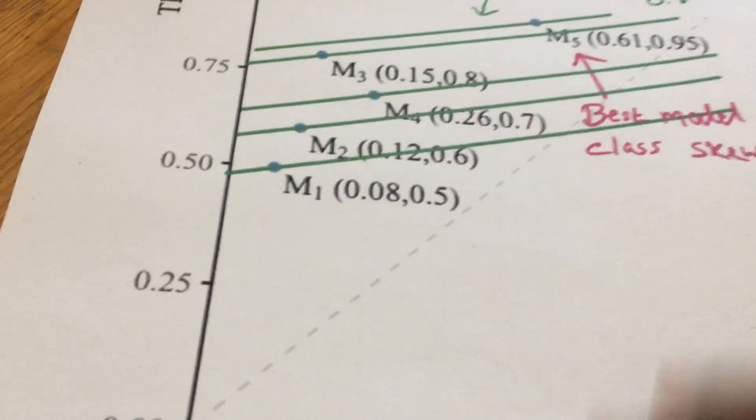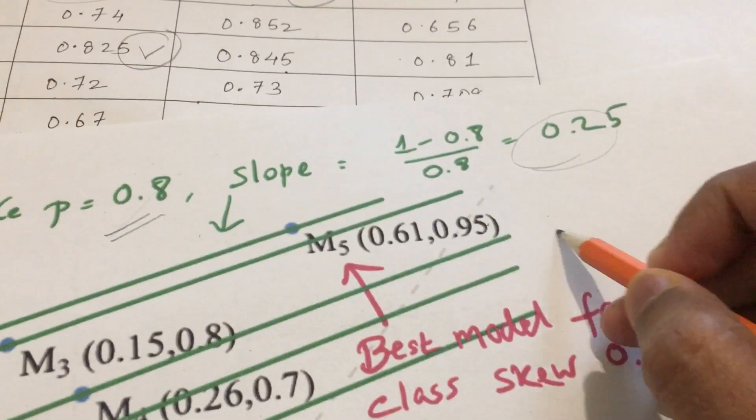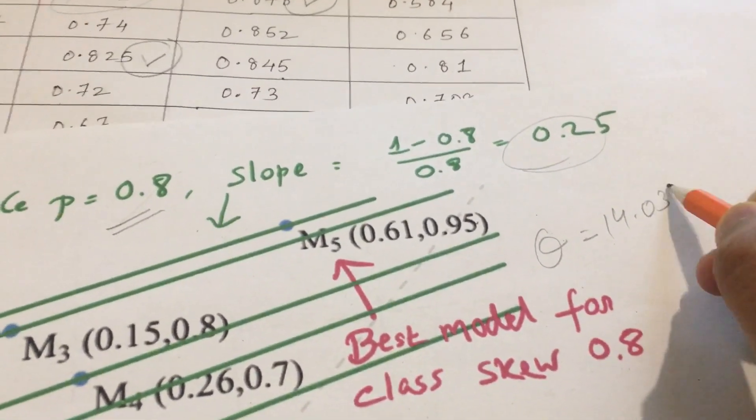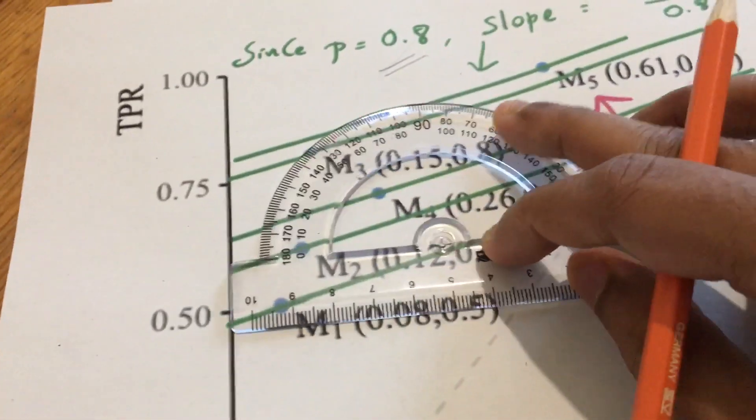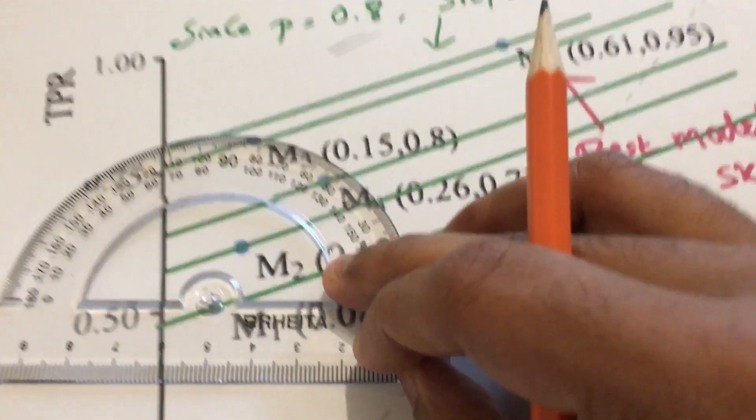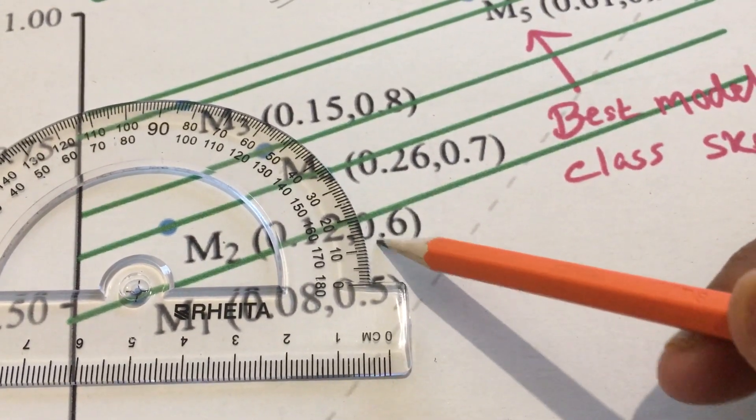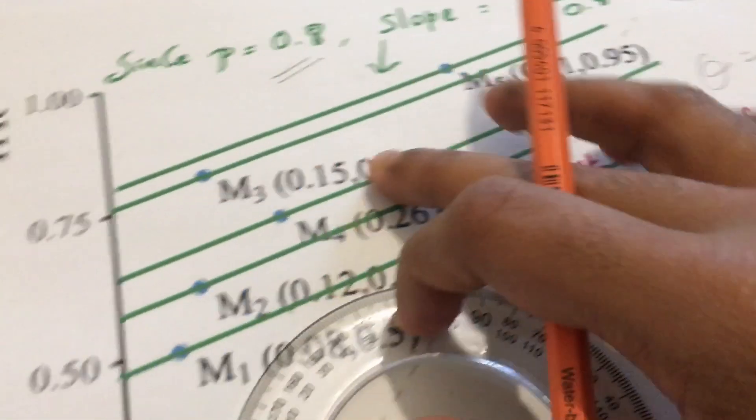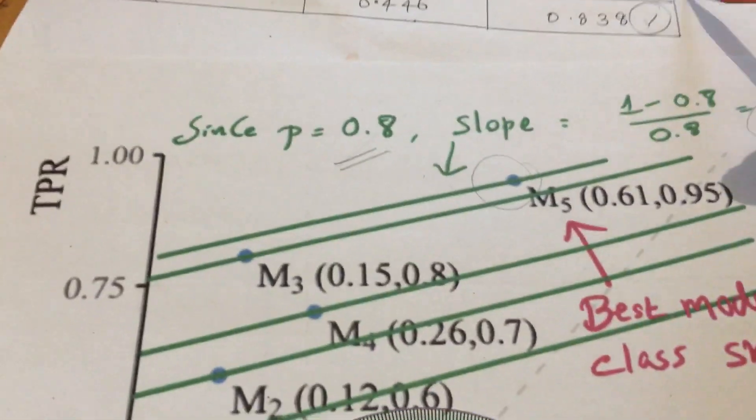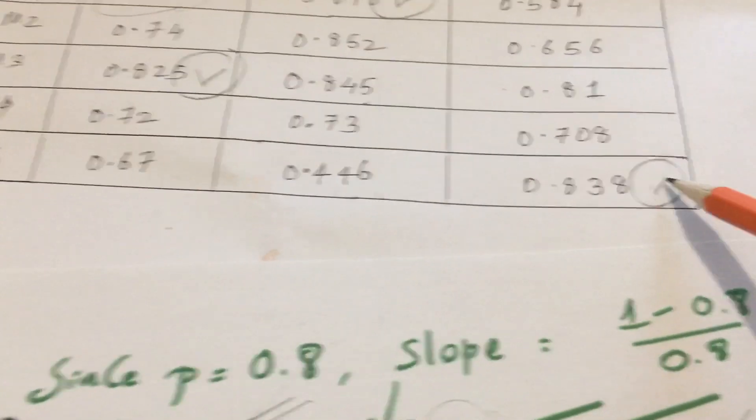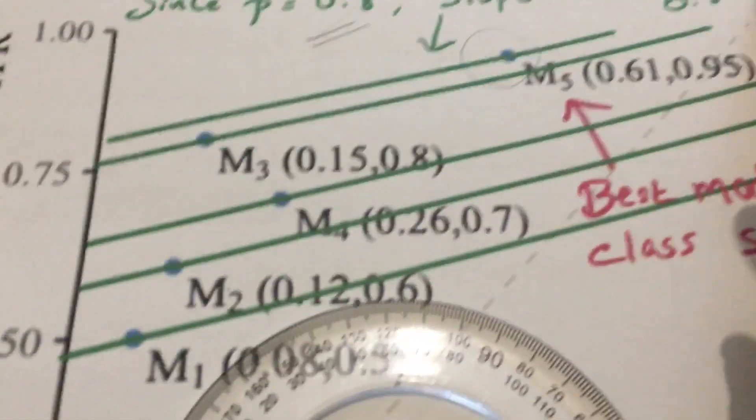Finally for the skew class 0.8 we get this slope as 0.25. Here we get theta as 14.03 degrees. If we place the protractor and draw the line here corresponding to this, you can see it's somewhere near 14. You can draw lines for all these models and determine which model is ahead. You can see that model 5 is the most accurate one for probability 0.8.